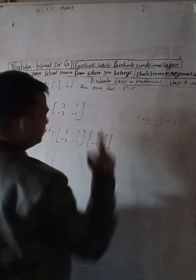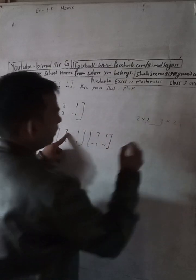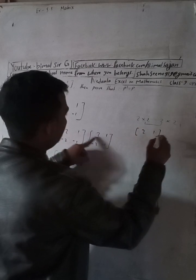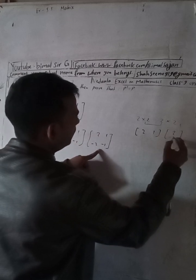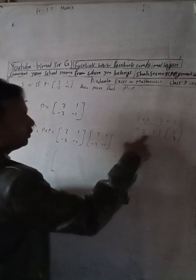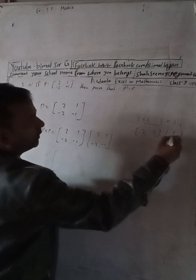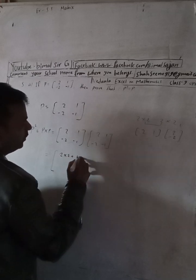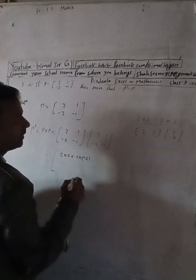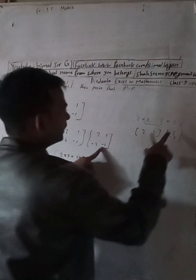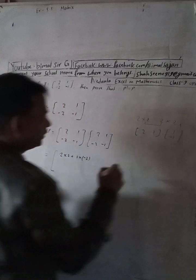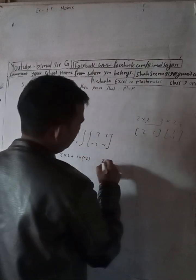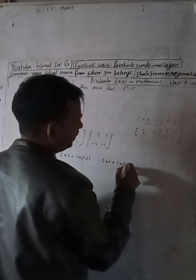Our result will also be a 2×2 matrix. For the first row, first column: we take the first row and first column, giving us 2×2 plus 1×(−2). For the first row, second column: 2×1 plus 1×(−1). Now for the second row, the second column gives 2×1 plus 1×(−1).